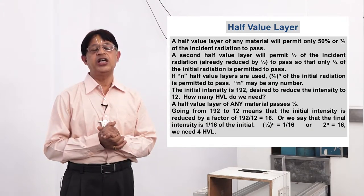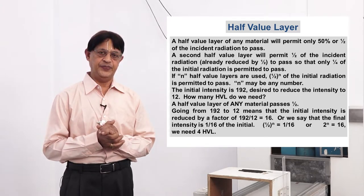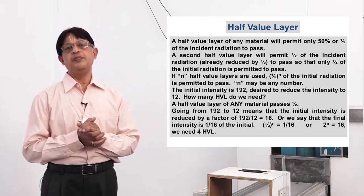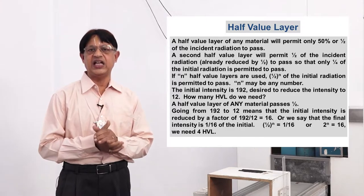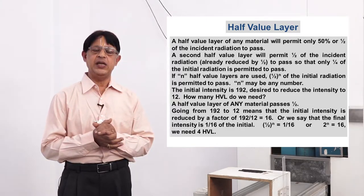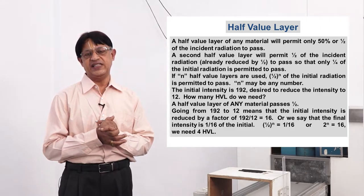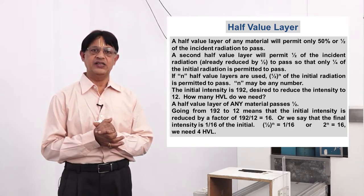Our experiment is going to be with a chosen denser material — lead — varying the thicknesses from smaller to increasingly larger, and we will follow how there is a reduction in intensity. We can reduce the radiation intensity to 50 percent of its original value; that thickness of the material is called the half value layer (HVL).